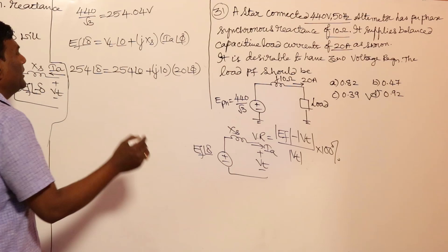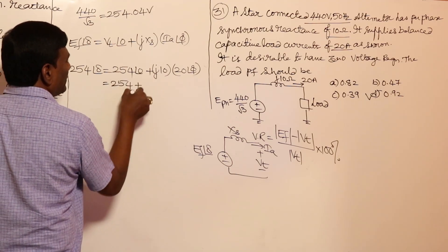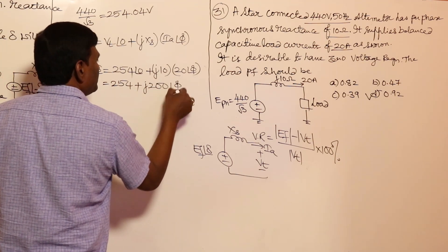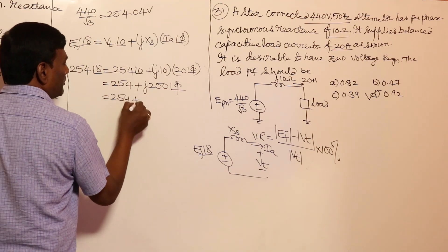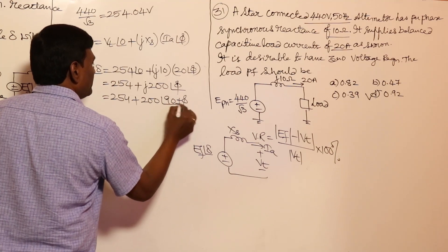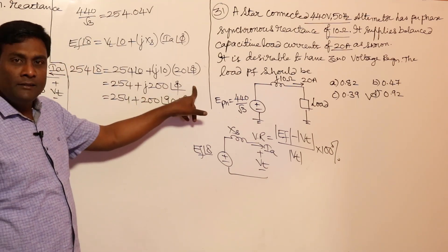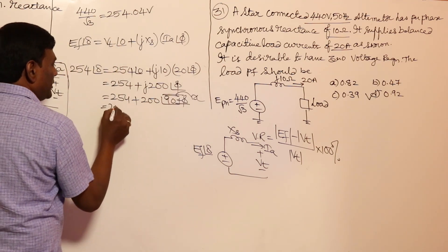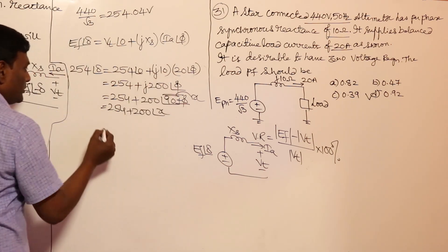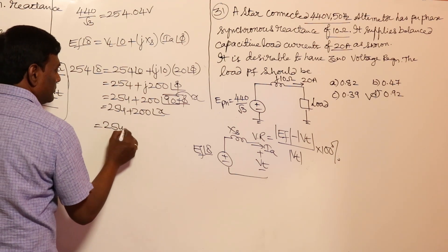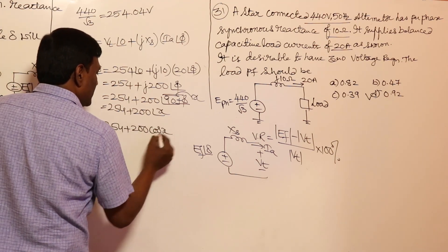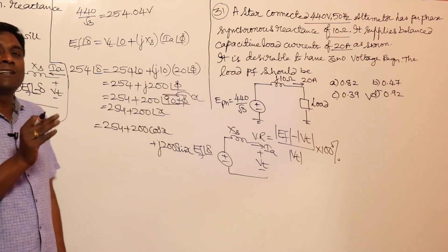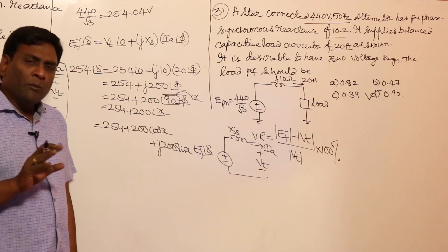This becomes 254 plus j·200 at angle phi. That is 254 plus 200 at angle (90 + phi). Let me consider (90 + phi) as x. So this gives 254 + 200·cos(x) + j·200·sin(x). Don't get scared — everything will work out. Squaring both sides: 254² = (254 + 200·cos(x))² + (200·sin(x))².